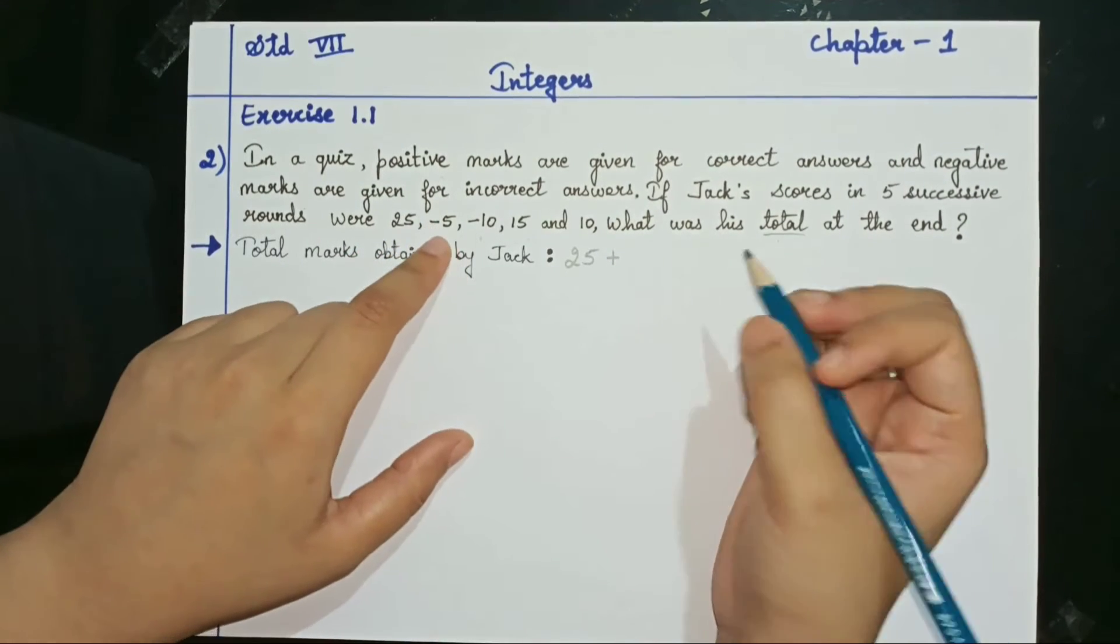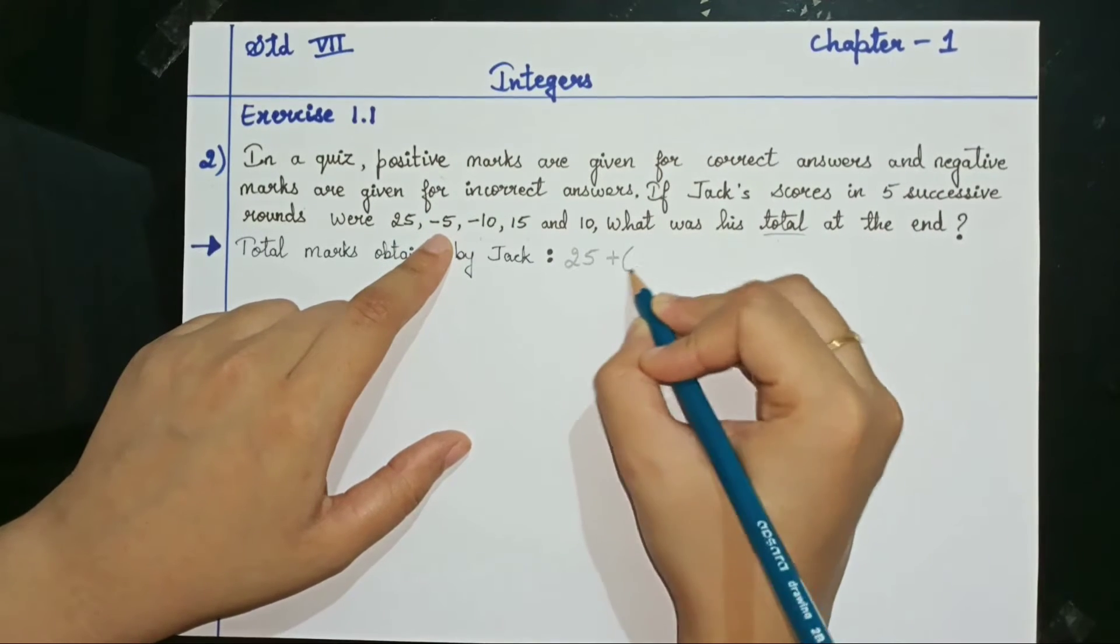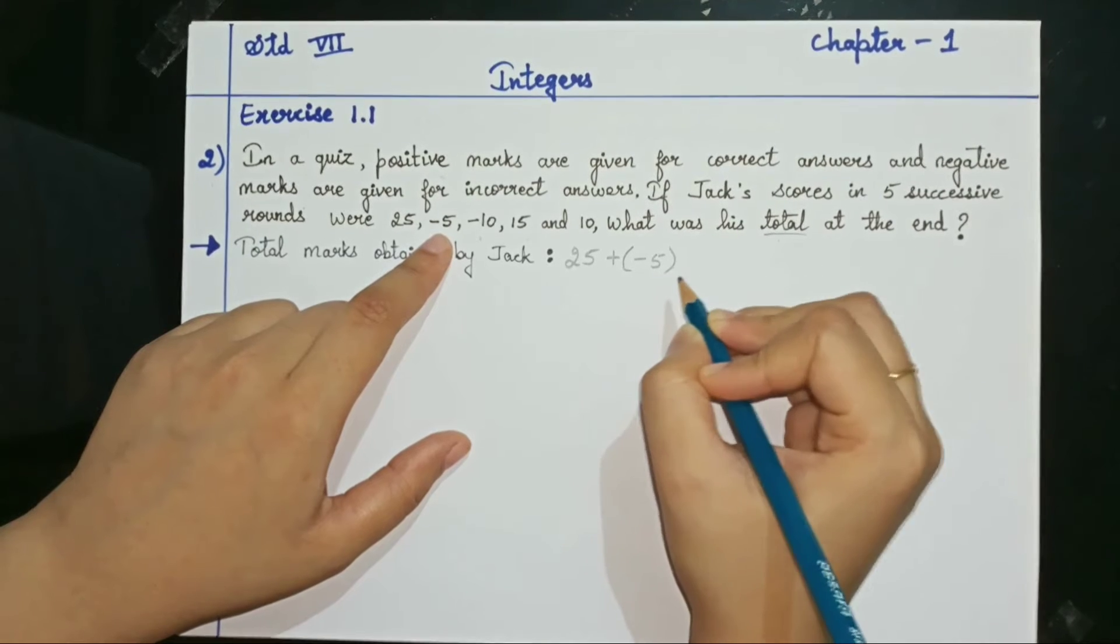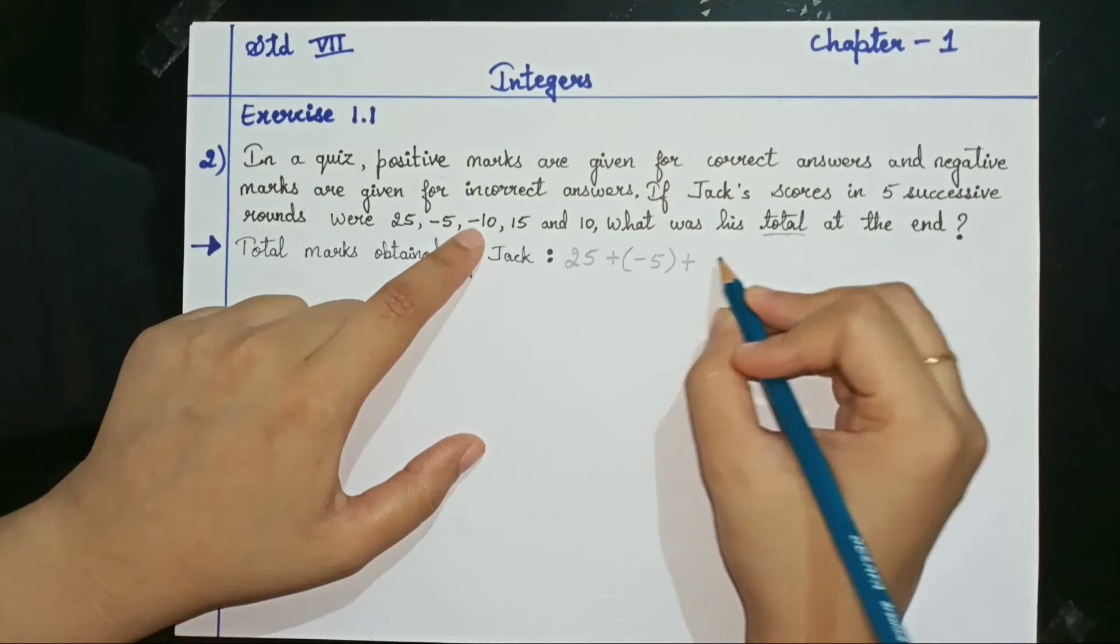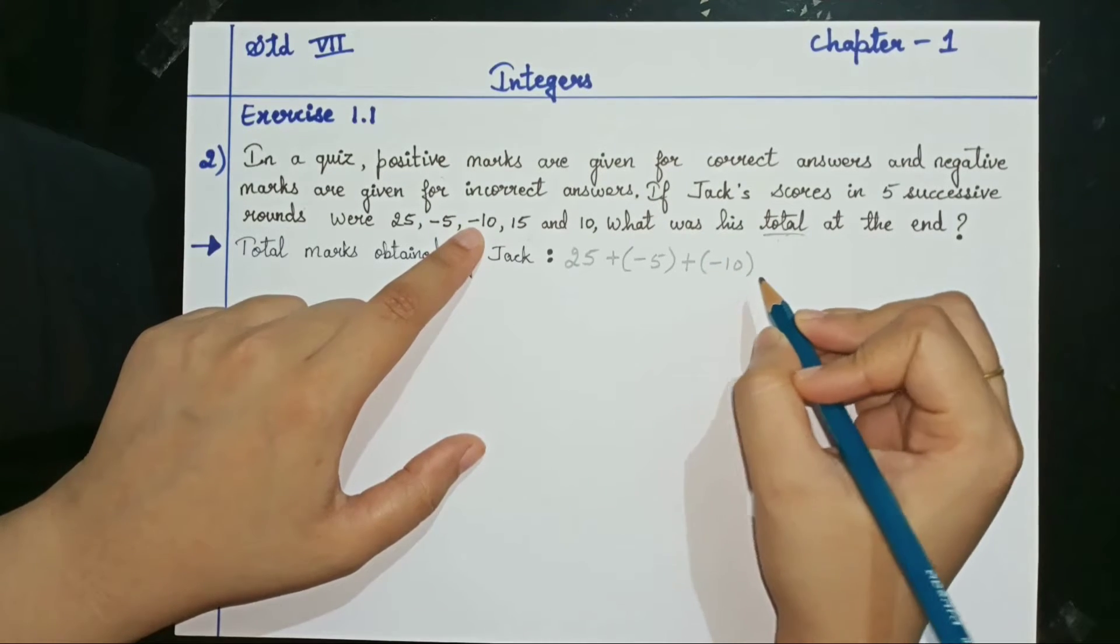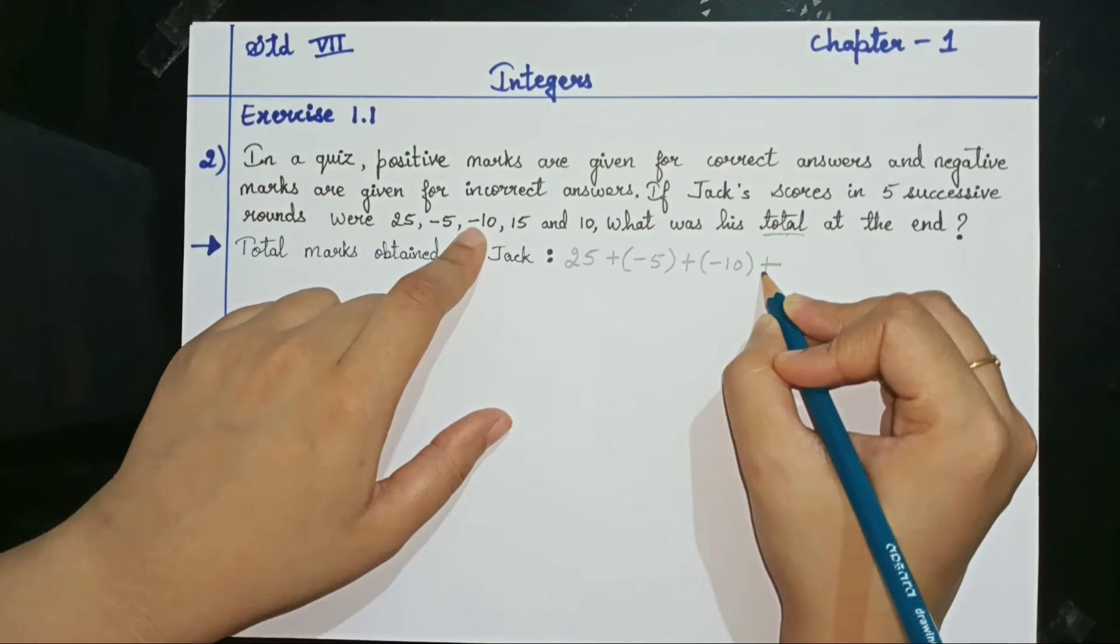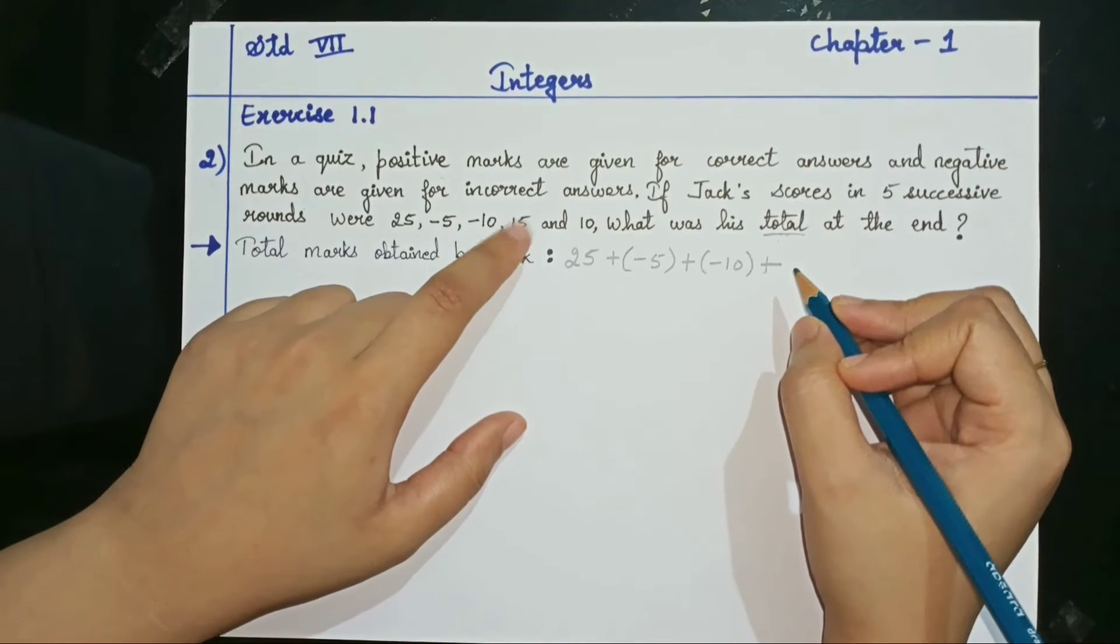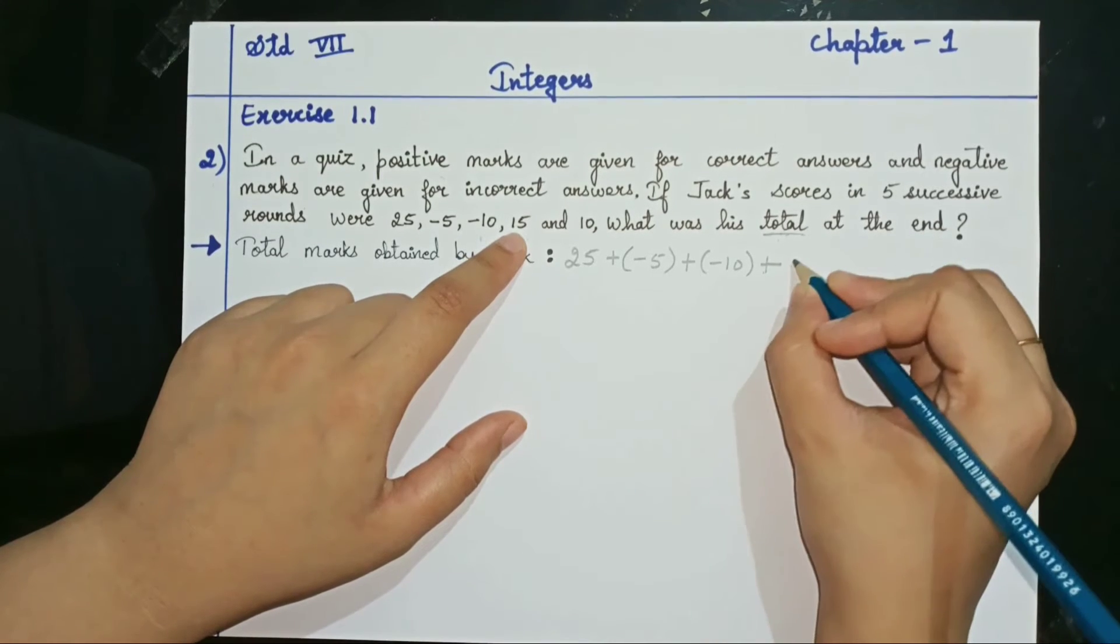Next, which marks he has got? He has got minus 5. So this minus 5 I will write it in a bracket. Next put the addition symbol because we are doing total here. Next what marks he has got? Minus 10. I will put this minus 10 in the bracket. Next put the addition symbol because we are doing total. Next they have given the marks 15. It's plus 15. So no need to put bracket now.